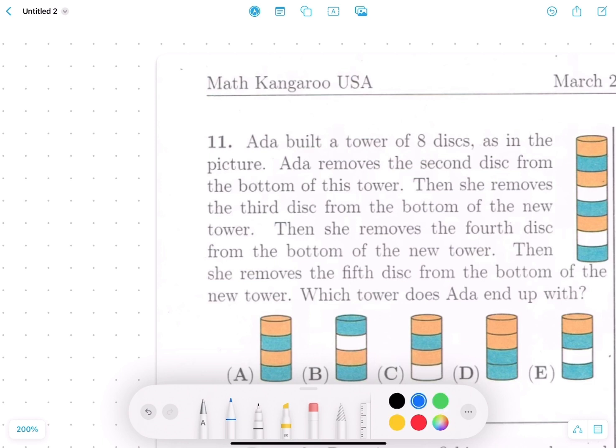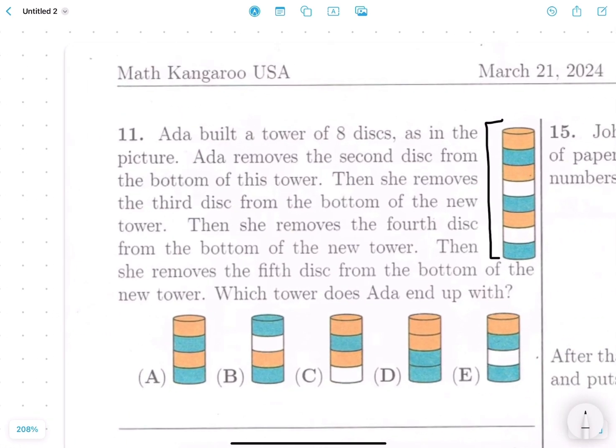Okay, there is a series of events that happens here. All we've got to do is keep track of it. So first, we have this tower right here. She removes the second disk from the bottom of this tower. So this white one is gone. We'll just color it out. What's left is the new tower. Then she removes the third disk from the bottom of the new tower. So let's count. This is 1, 2, 3.